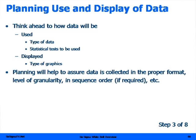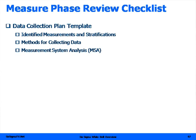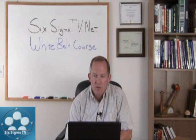We then talk about planning the use and display of data — what kind of data is it, what kind of tests are we going to perform, and how are we going to display it using graphical illustrations to show how the process is performing? This is a quick measure review checklist: make sure we have our data collection plan template filled out, identify the measurements and any stratification, how we're going to collect it, and our measurement system analysis — ensuring the data is good, all people are collecting the right data, and that the data is repeatable and reproducible throughout the organization.